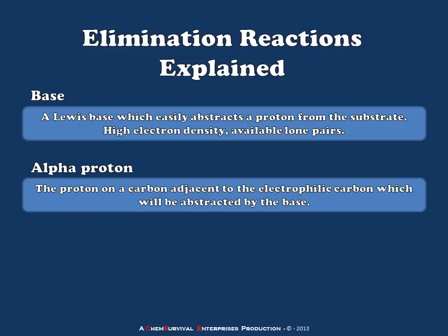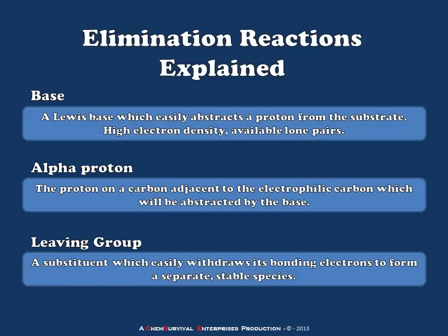Next I'm going to define something called the alpha proton. An alpha proton is a proton which is bonded to the carbon adjacent to the electrophilic carbon on a substrate. So anytime we refer to the alpha position to any functional group, we're talking about the position which is one carbon bond away. And finally the leaving group, which just as in substitution, is going to be a substituent which easily withdraws its bonding electrons to form a separate stable species.